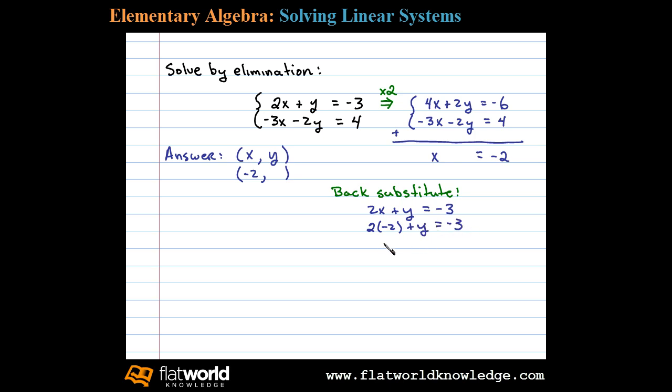The only variable left is y. Negative 4 plus y equals negative 3. Now adding 4 to both sides we have y equals 1. And therefore the ordered pair negative 2, 1 is the solution to this system.